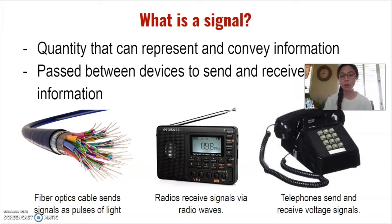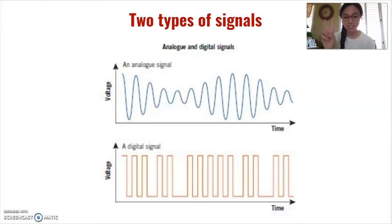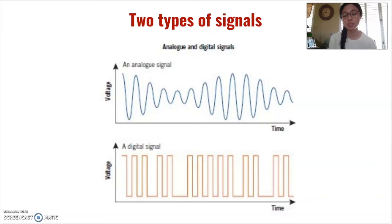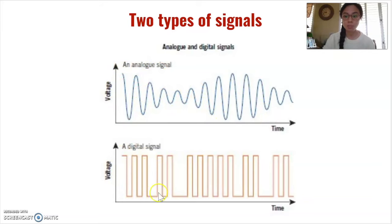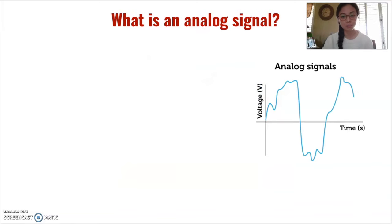There are two types of signals: analog signals and digital signals. Even from this image, you can visually see the difference between the two. Analog signals are represented by a continuous wave, while digital signals are represented by discrete columns. But what does that mean and how do they work? Let's get into more specific details about each type of signal.